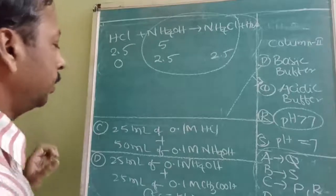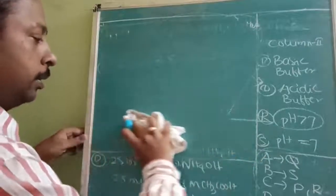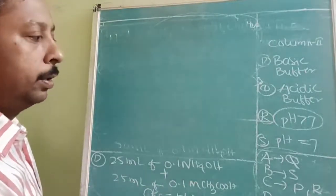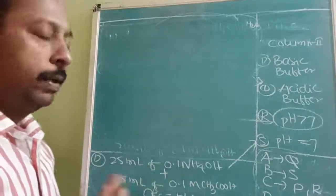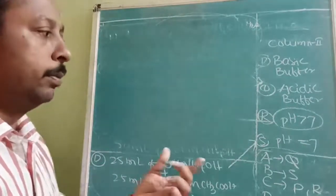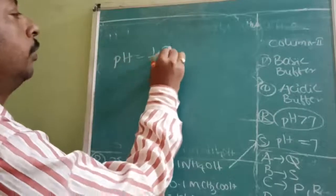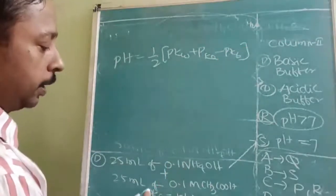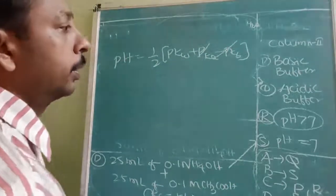For part D: weak acid and weak base, with KA = KB, and both in equal milliequivalents (25 × 0.1 = 2.5 each). Using the formula pH = ½(pKw + pKa − pKb): since KA = KB, the pKa − pKb terms cancel, giving pH = 7. D answer is S.